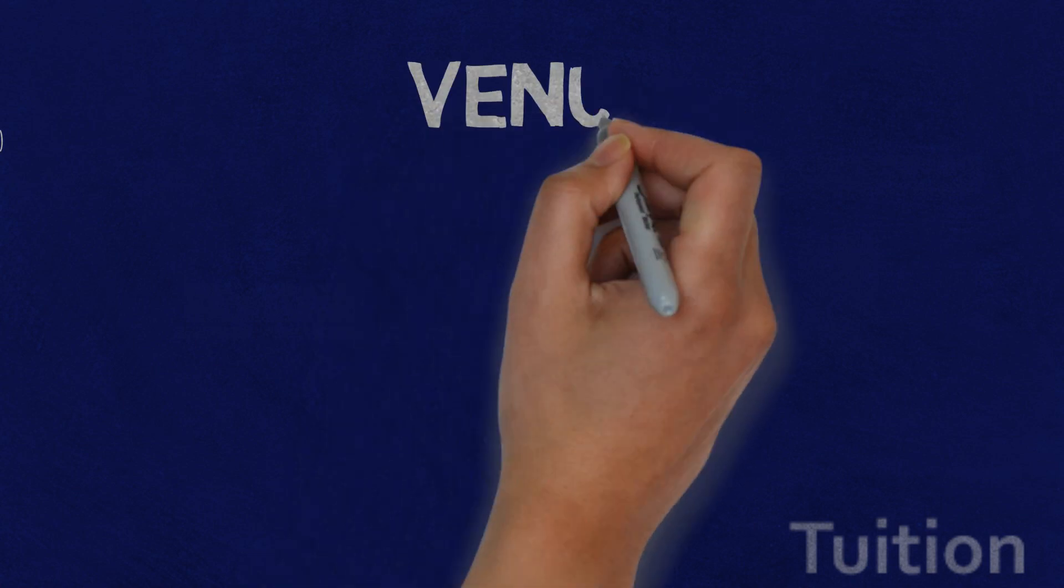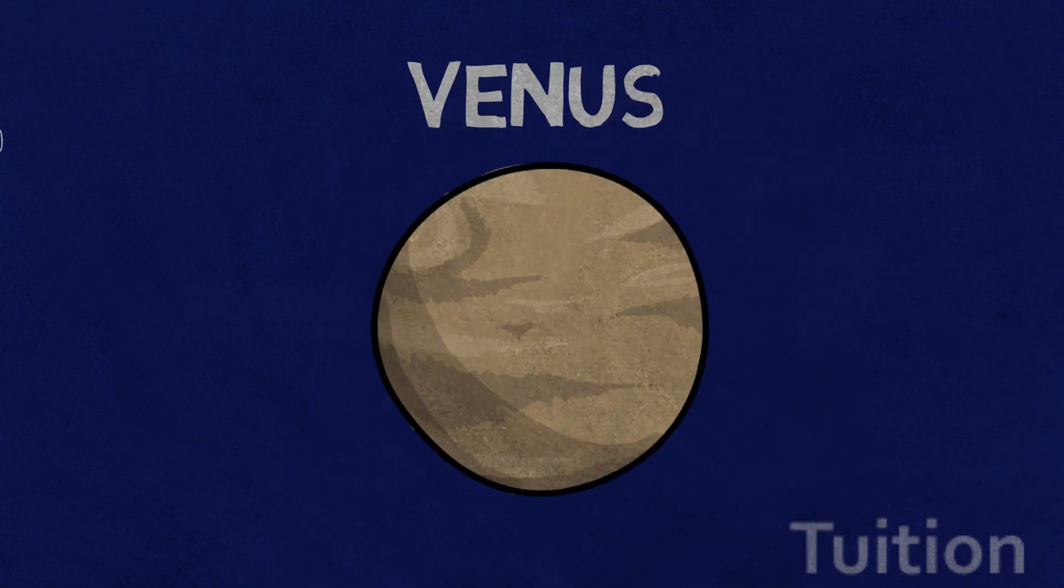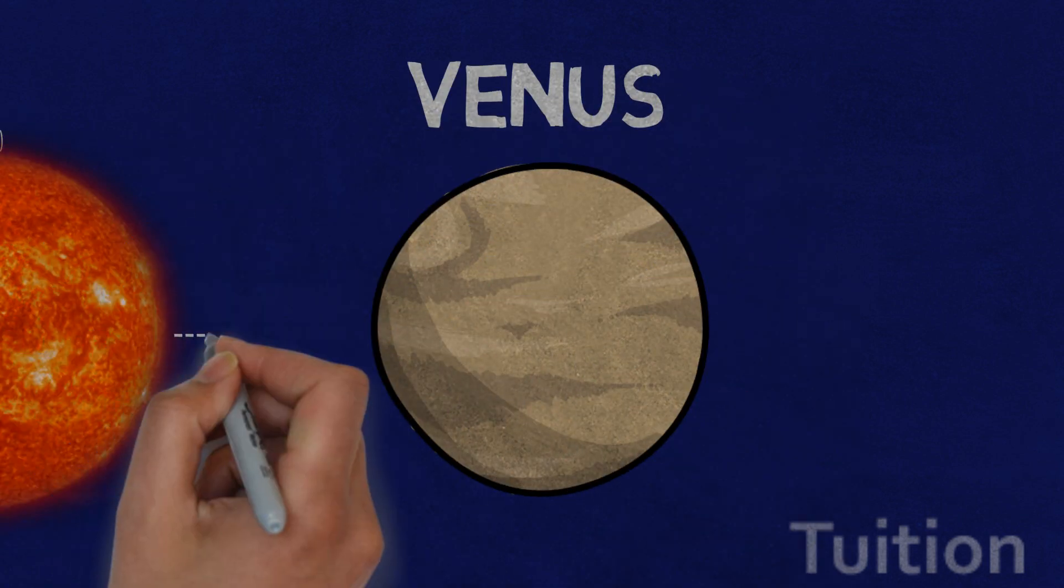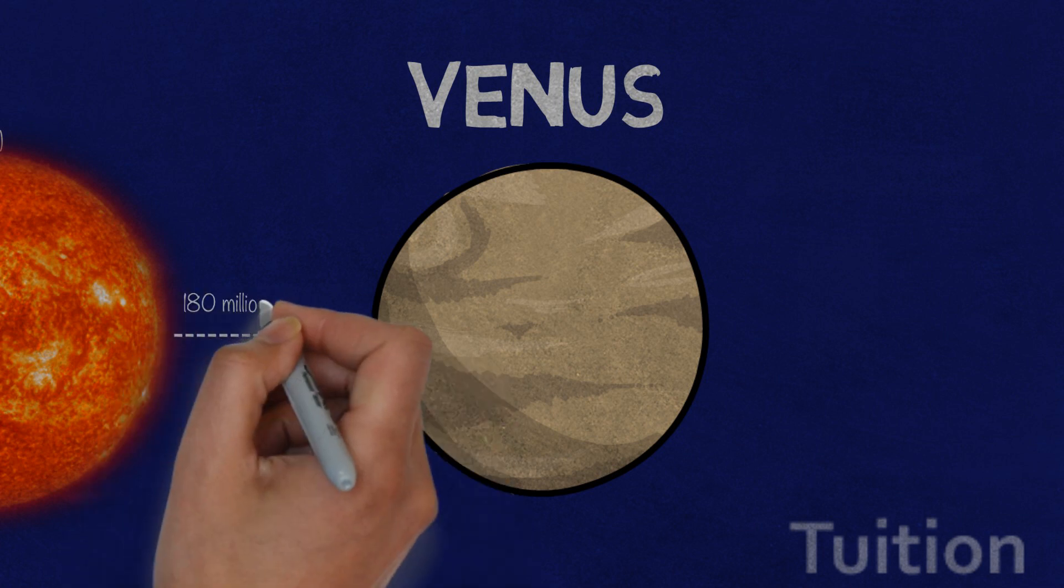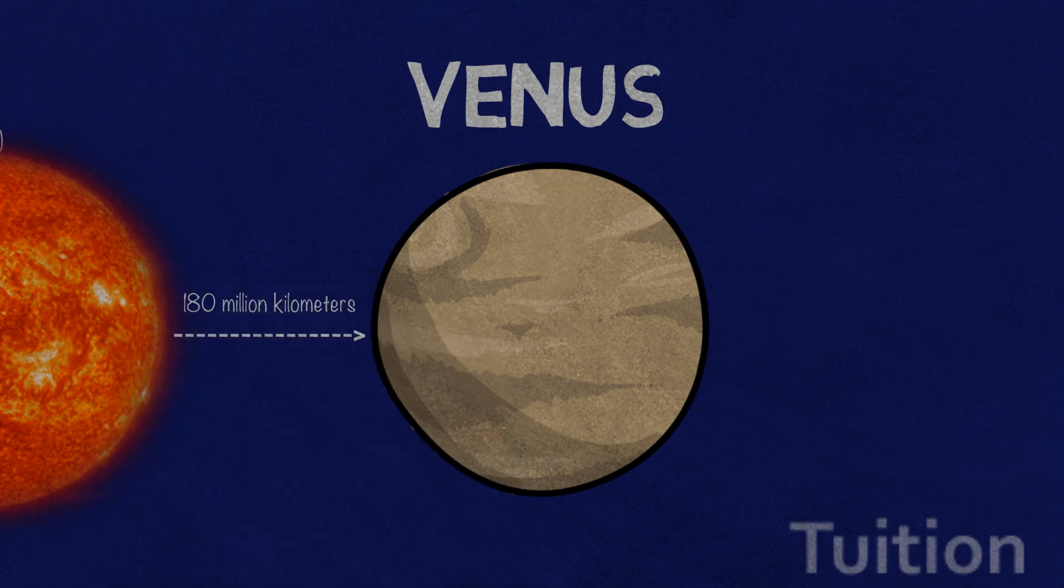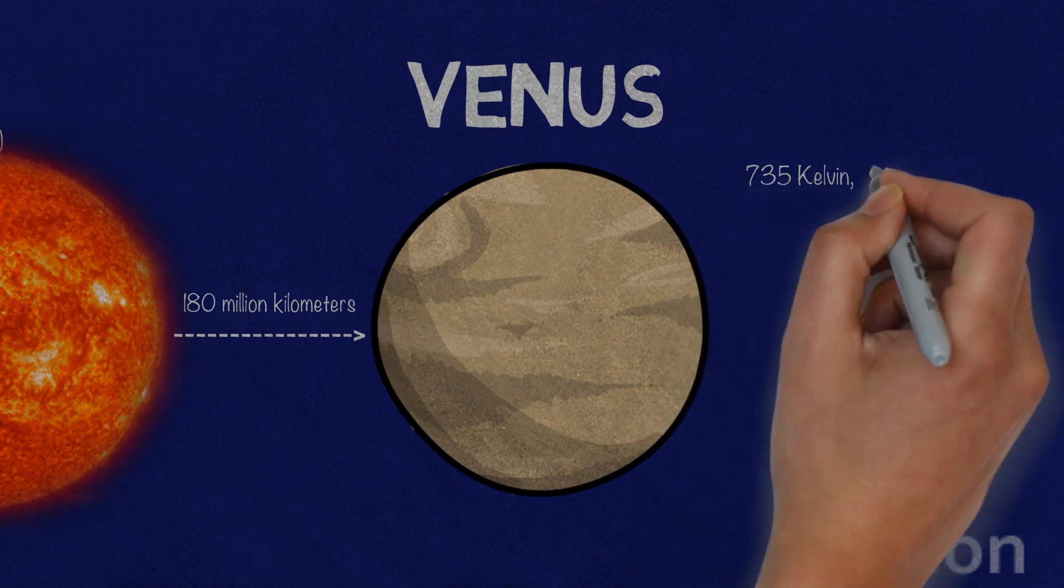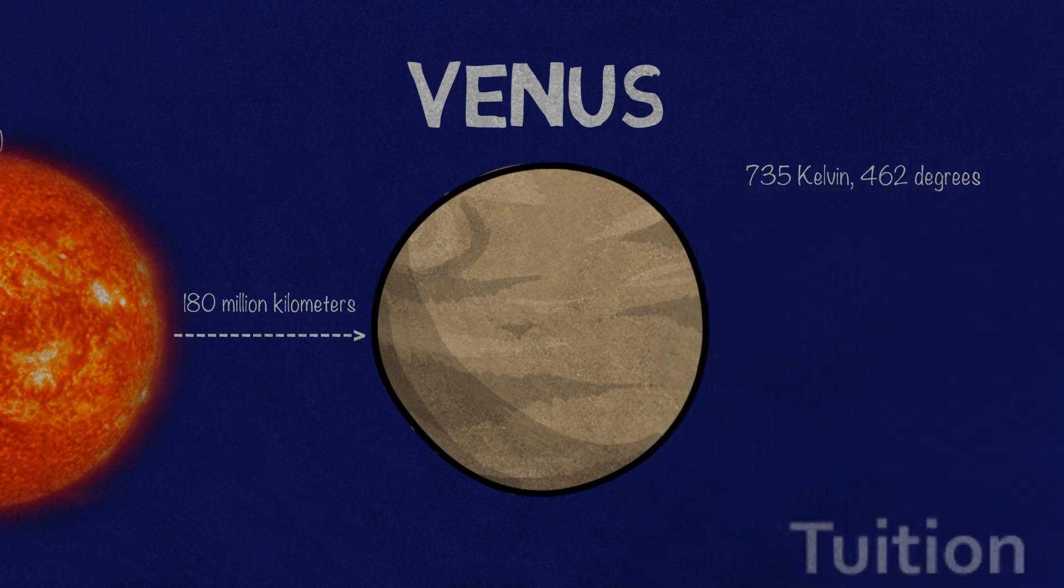But Venus is hotter. Venus is much farther from Sun, orbiting at a distance of more than 180 million kilometers. Average temperatures there is a hellish 735 Kelvin, that is 462 degrees Celsius.